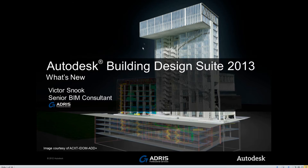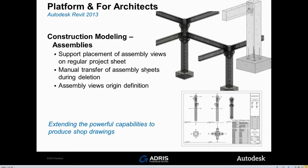If we go to assemblies first, assemblies were available in the previous release. What you couldn't do in the previous release was put the assembly drawings, which are automatically created, onto any other sheet apart from the sheet within assemblies. That's now changed and assembly views can go onto any other sheet within the Revit project. So assemblies support placement of assembly views on regular project sheets, manual transfer of assembly sheets during deletion, and assembly views origin definition.